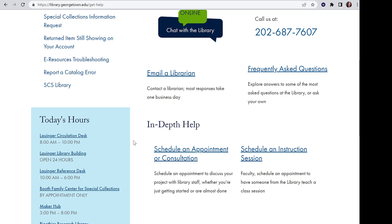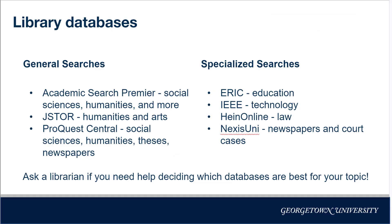Let's dive into conducting your literature review. The library subscribes to over 700 databases, which tend to specialize in certain topics or formats. Some databases are more general, such as Academic Search Premier, JSTOR, or ProQuest Central, while some are highly specialized, such as ERIC, IEEE, HeinOnline, and Nexus Uni. To get a wide range of articles, it is important to search in more than one database. The research guides related to your topic are a great place to find relevant databases.